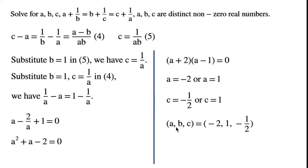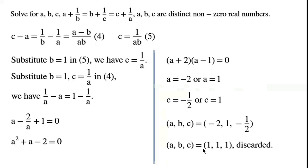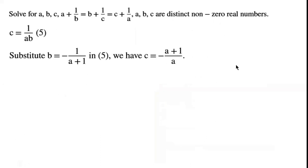we get A, B, C equals minus 2, 1, minus one half. Or A, B, C equals 1, 1, 1. This second set of solutions is discarded as A, B, C are required to be distinct non-zero real numbers.